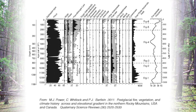This particular data set comes from Foy's Lake, just outside of Kalispell, and gives a remarkable history of vegetation across the northern Rockies. The left-most column shows time since present, starting at zero — a couple years ago when this work was published — all the way back to 13,000 years ago.